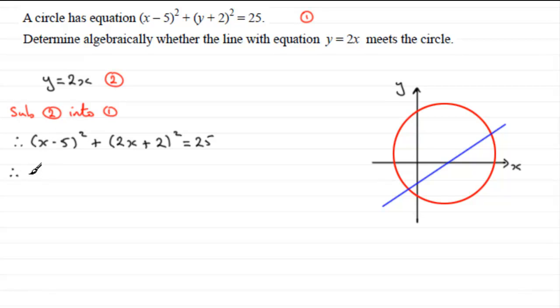So if we expand each of the brackets out, we've got x² - 10x + 25. Now with the second bracket, square the first term: (2x)² is 4x², twice the product of the two terms is 4x so we double that, that's 8x, and then we square the last term: 2² is 4.